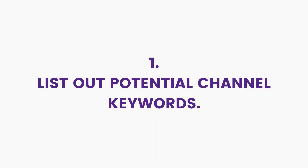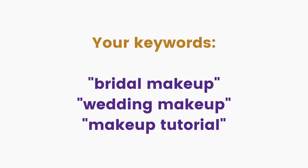The first step is to list out potential channel keywords by coming up with a list of words or phrases that describe your YouTube channel. This should be a combination of terms that you are confident describe your channel accurately. For example, if you recently launched a new bridal makeup YouTube channel, you're probably going to be thinking of channel keywords like bridal makeup.